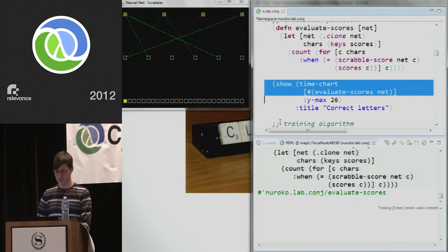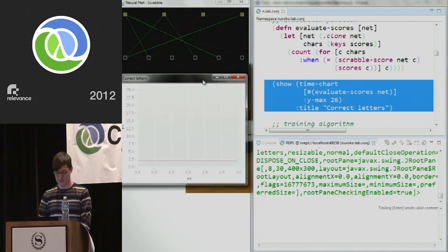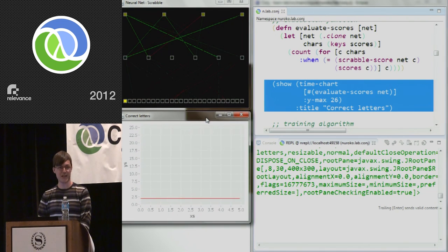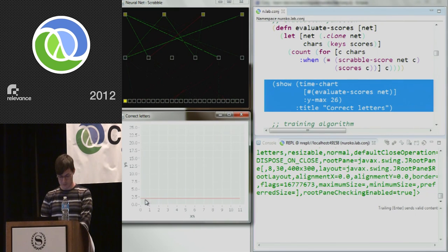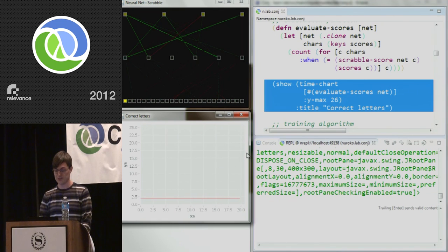So let's define what success looks like. If we're going to evaluate this network, what we're going to do is we're just going to count the number of times when the output of the network, so the Scrabble score that it produces, is equal to the actual score from the map. So that's our evaluation function. And let's do some visualization. Let's put that on a time chart. So what I have here is a continuously updating Incanta chart. Incanta is a great library, by the way. Which is just saying how well this network is doing.